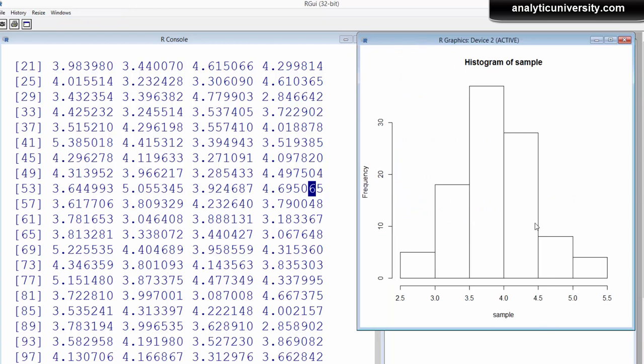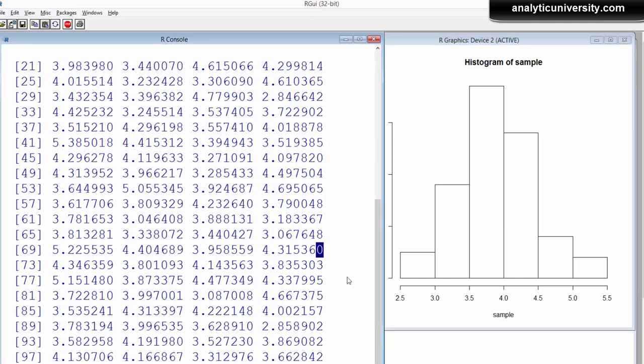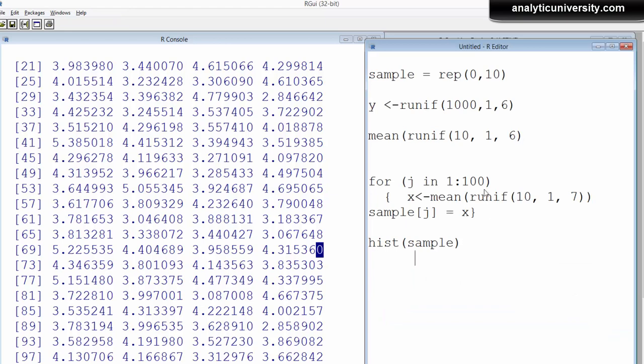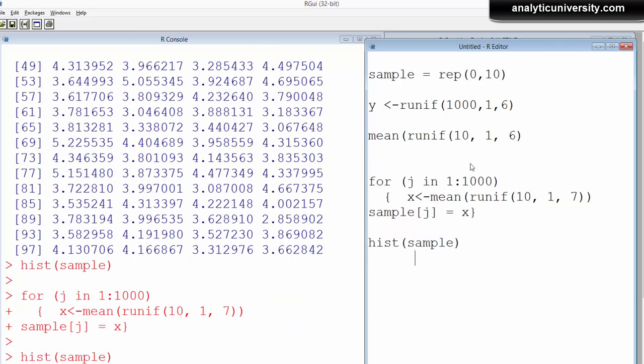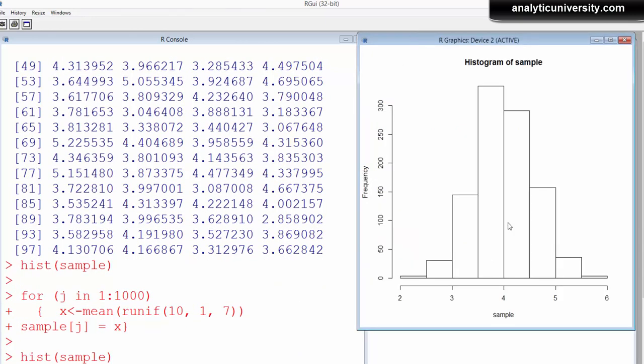So this is how the histogram looks like. This is 100 different averages. It looks very close to a normally distributed curve, but it's not quite normally distributed. It's closer to that. It's because we have done it for 100 times. But if we do it for 1,000 times, it will be even closer to that. So we'll do it for 1,000 times and do it again. It's slightly better.